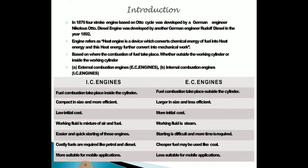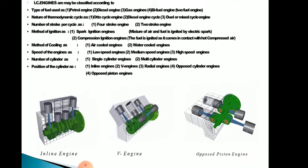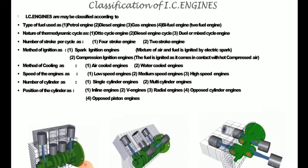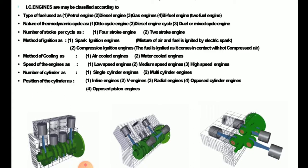Now let us look at the classification of the IC engine. There are different parameters on which they are classified. The first parameter is based on the type of fuel used — petrol, diesel, gasoline, or biogas — giving us petrol engine, diesel engine, gas engine, and biofuel engine. The second parameter is the nature of the thermodynamic cycle: Otto cycle, diesel cycle, or dual cycle, which is a combination of Otto and diesel cycles.